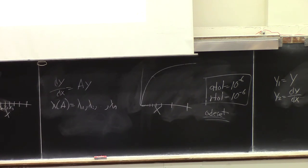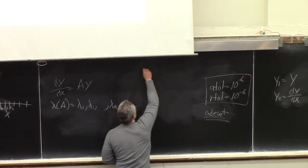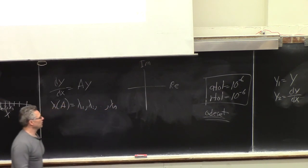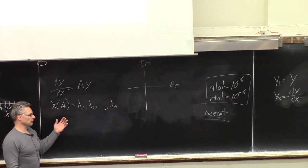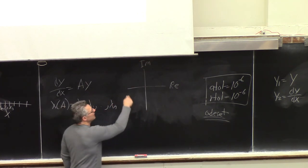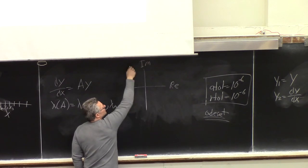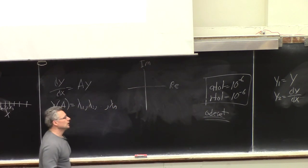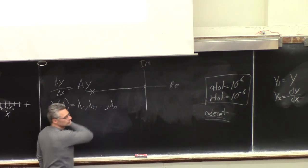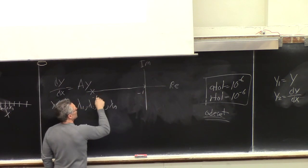You can plot eigenvalues in the complex plane — real part on one axis, imaginary part on the other. Systems with eigenvalues in the left half-plane are stable; those in the right half-plane are unstable. A stiff system might have one eigenvalue at, say, -1 and another at -100 — they're very far apart from each other. If the solution contains a term like e^{-100t} it decays really quickly, and another term like e^{-t} that decays much more slowly.